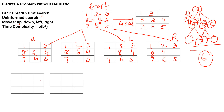So when the blank space is in the center, it has four children. After each move you have to check whether this is the goal state. Here we have one, three — so it does not match the goal state. We have to make more branches. These are also called branches, kids, or children.